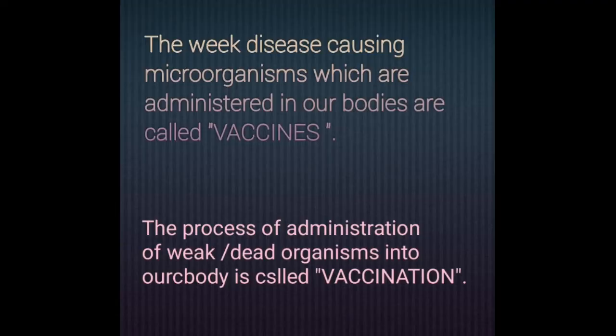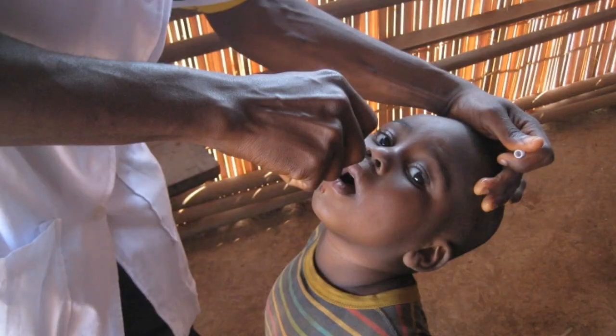Vaccines are weak disease-causing microorganisms administered into our bodies. The process of administration of weak or dead organisms into the body is called vaccination. For example, the polio vaccine is given in the form of oral drops, which prevents polio in children.